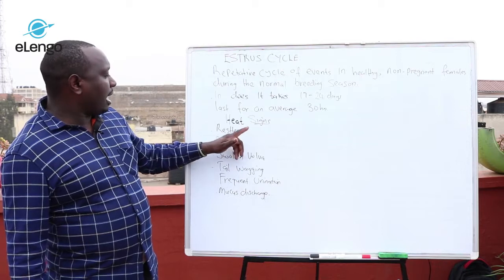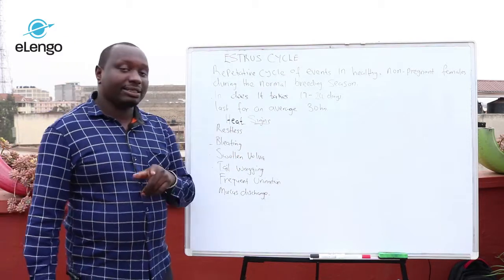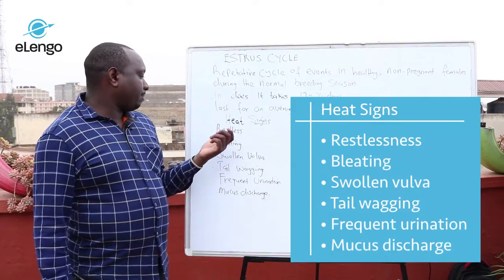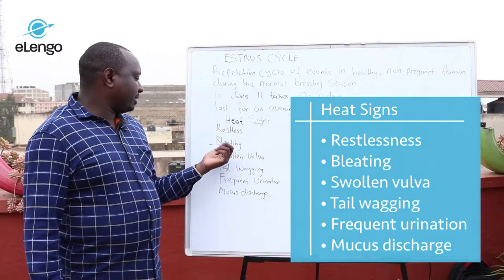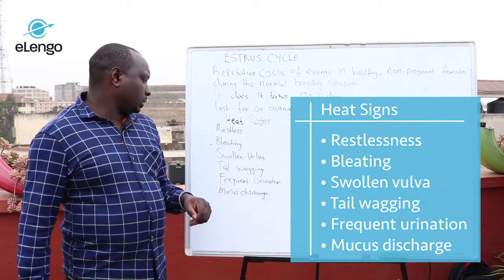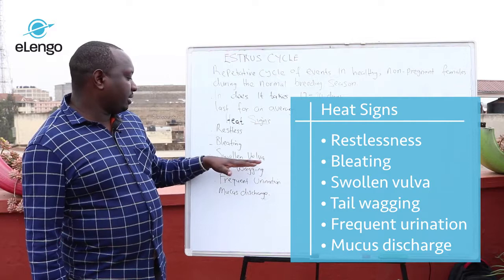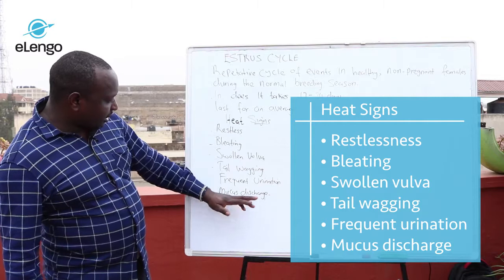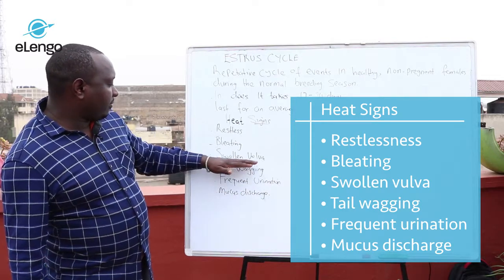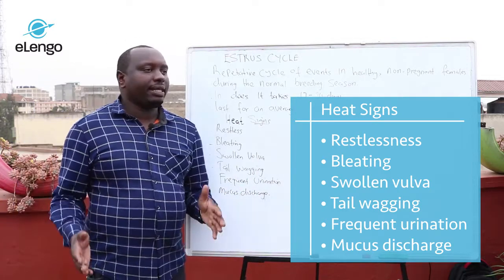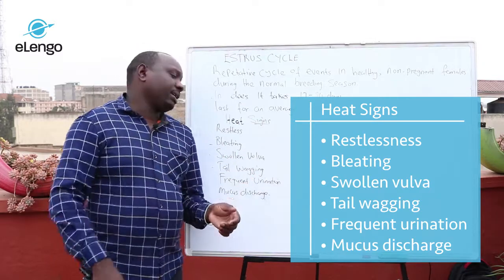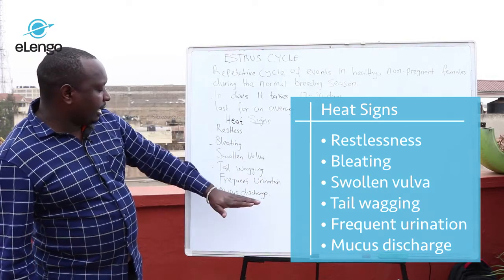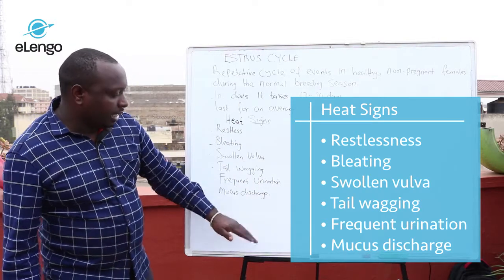The signs of estrus seen in does include: the first sign is restlessness — the doe is uncomfortable. Another sign is bleating, which is the sound produced by does. A very important sign is the swollen vulva, and also mucus discharge from the vulva. The vulva is the outer part of the female reproductive system, and this part becomes swollen and discharge is seen.